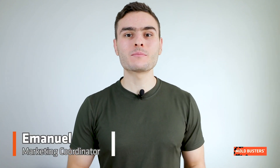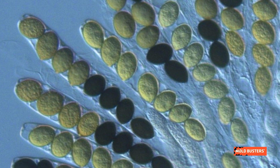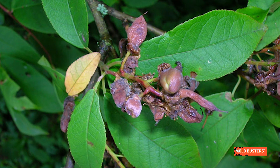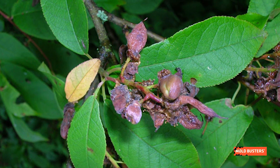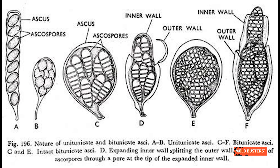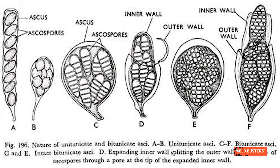Ascospores are tiny propagules produced in large quantities by fungi from the genus Ascomycota, which contains over 30,000 species. They are created in sacs, are morphologically very diverse, and can have traits characteristic to a certain genus or species. This makes them useful for taxonomic classification of species.